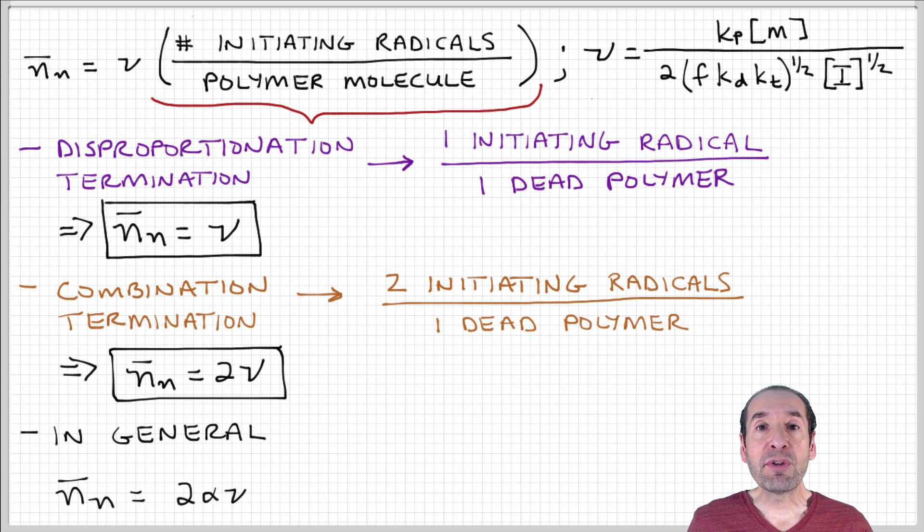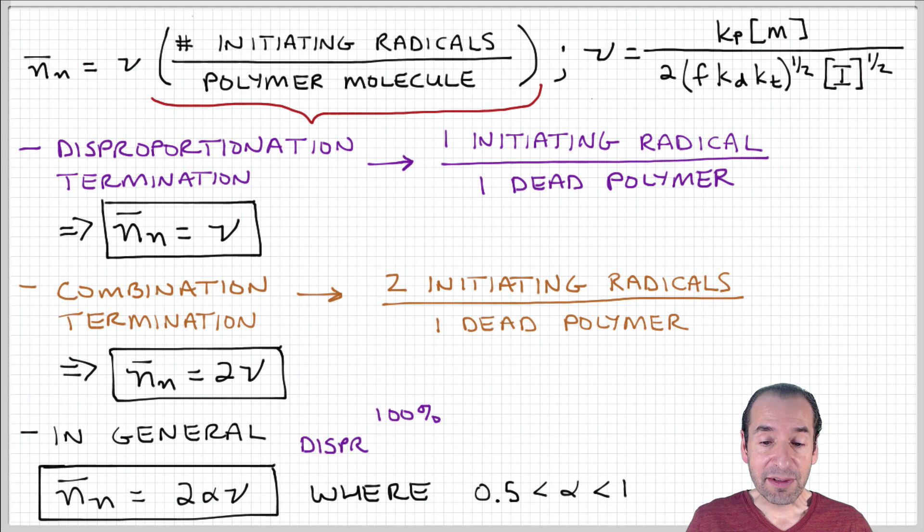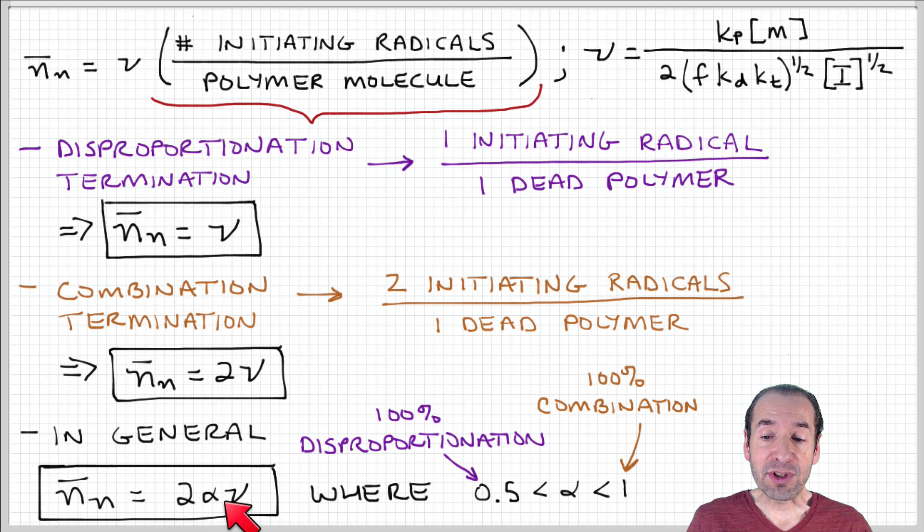In general, both of these processes are active. So we can come up with an overall expression, two times α times ν, where α is a parameter that expresses the relative amount or relative predominance of combination versus disproportionation.